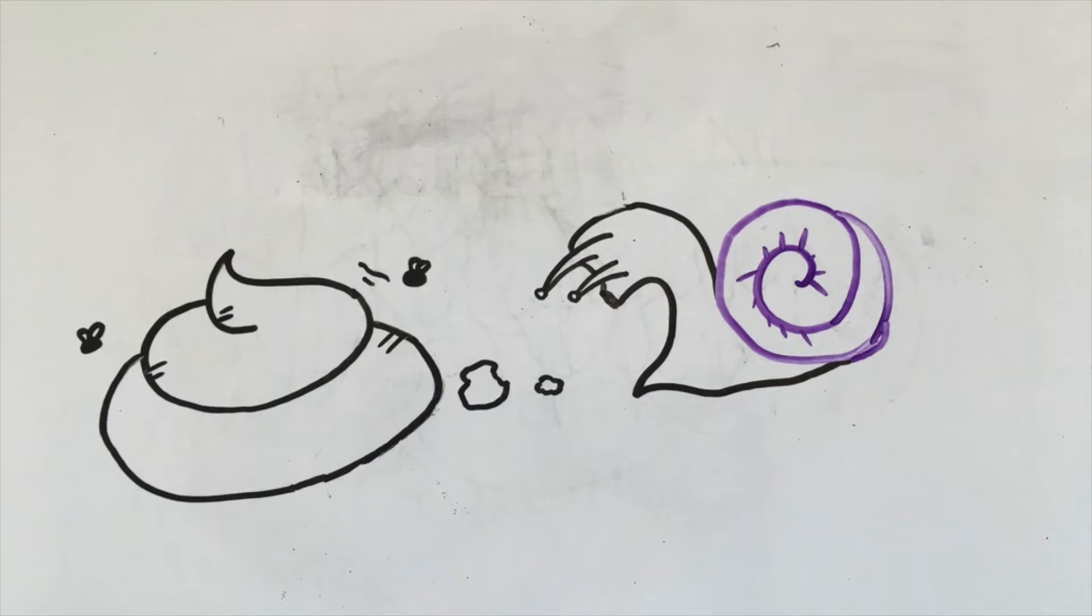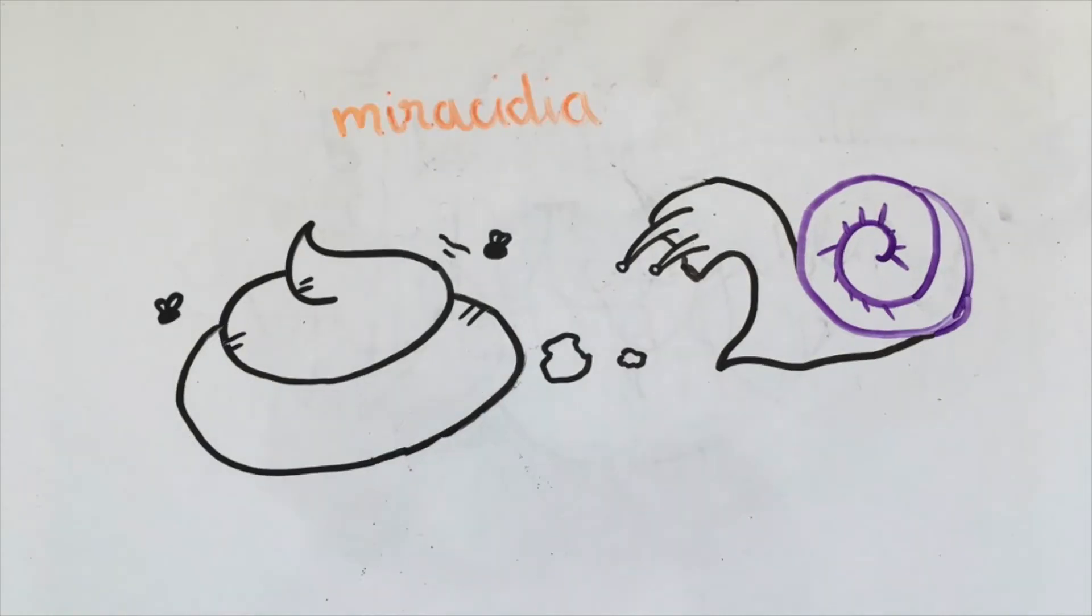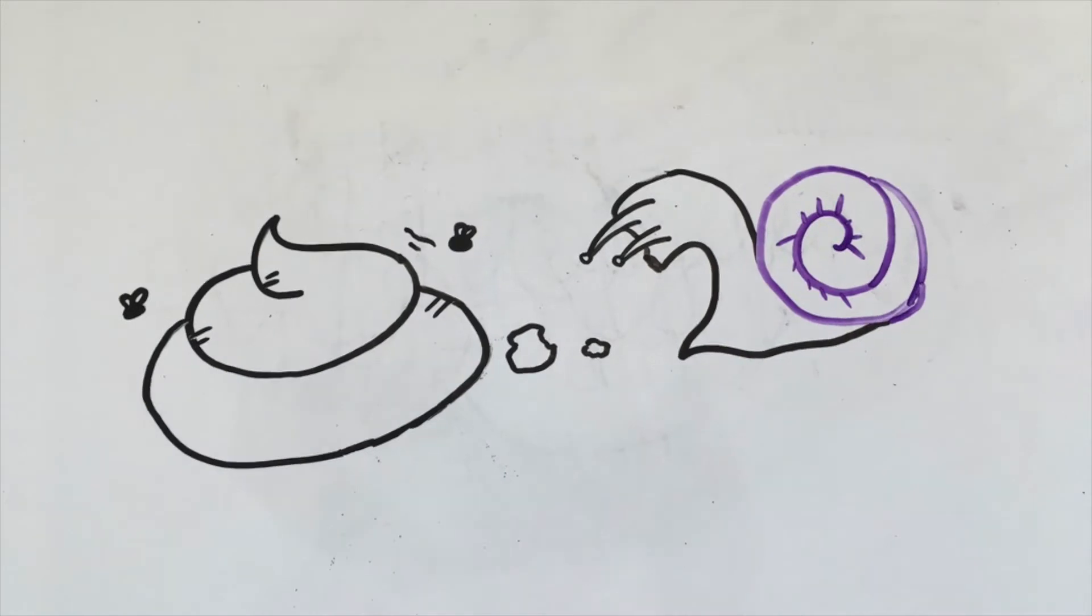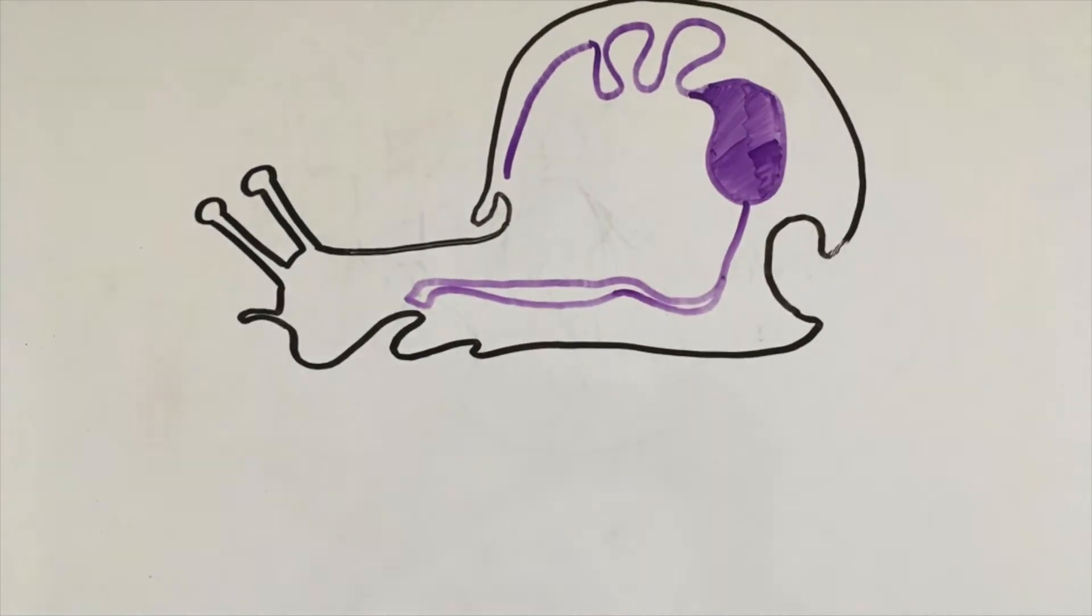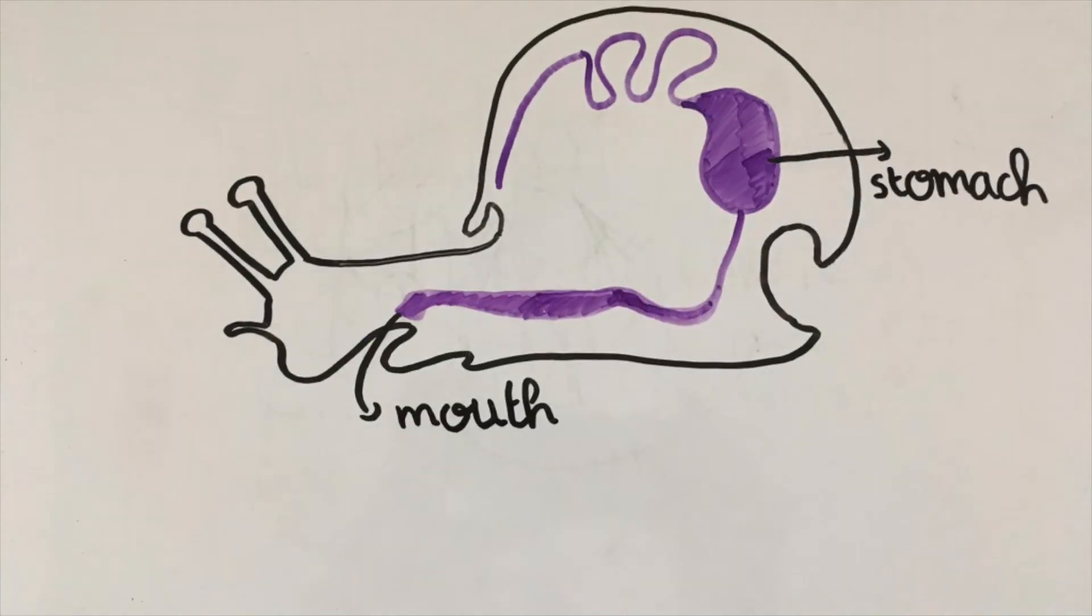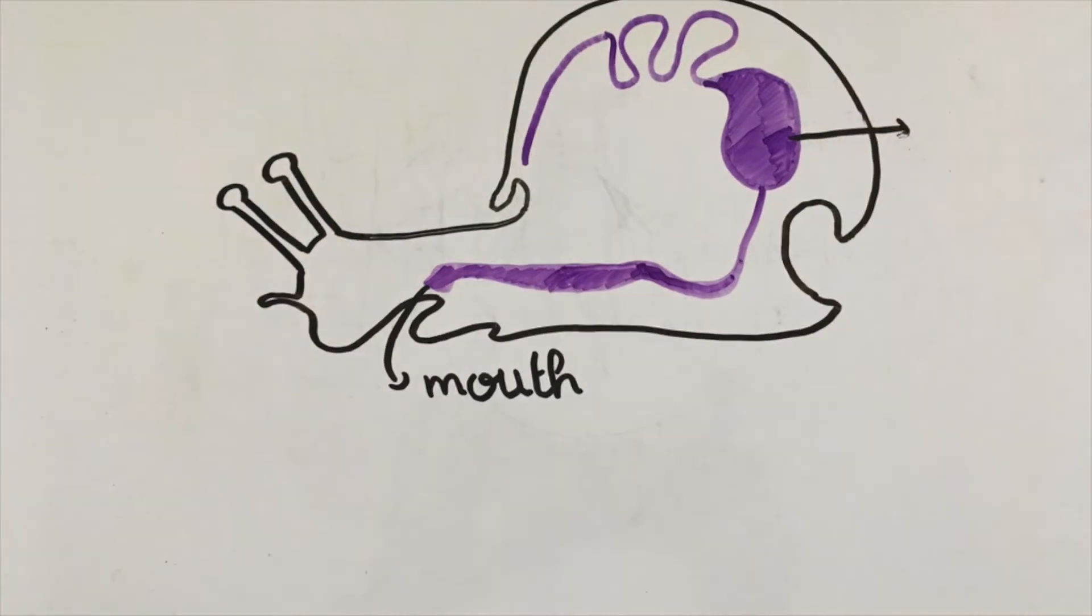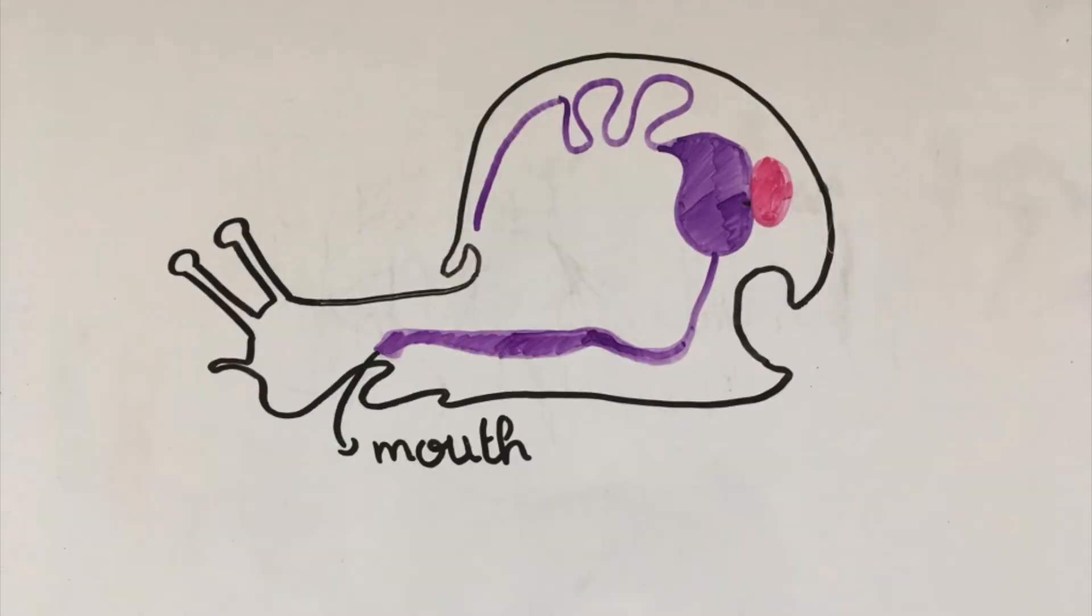Here the parasite develops from embryo to either Sporocyst or Miracidia. If it is a Miracidia, the parasite will then develop into a Cercaria. So let's take a quick look inside the snail. Embryos begin to develop in the stomach of the snail. Now the parasite makes its way to the digestive gland of the snail. They stay there until they grow some more.